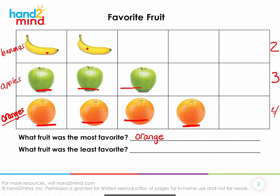What about which fruit was the least favorite? Did you say banana? Why is the banana the least favorite? How do you know the banana is the least favorite? Well, look at the bananas — they don't extend very far, so that is less than any of the other ones. Or you could say: I know two is less than three and two is less than four, so it has to be the least favorite because it has the fewest number of votes.